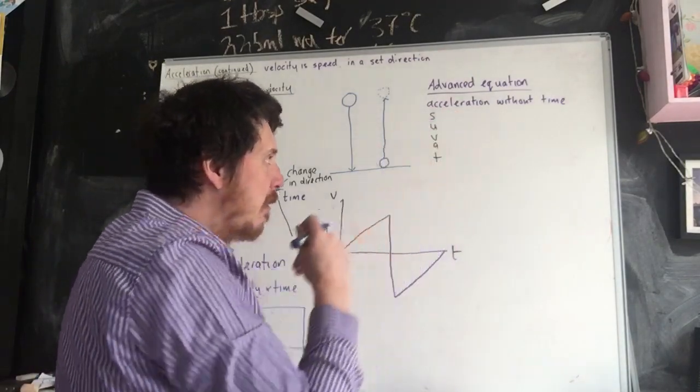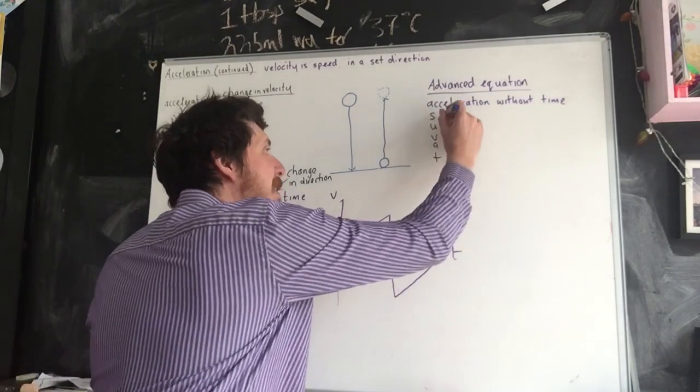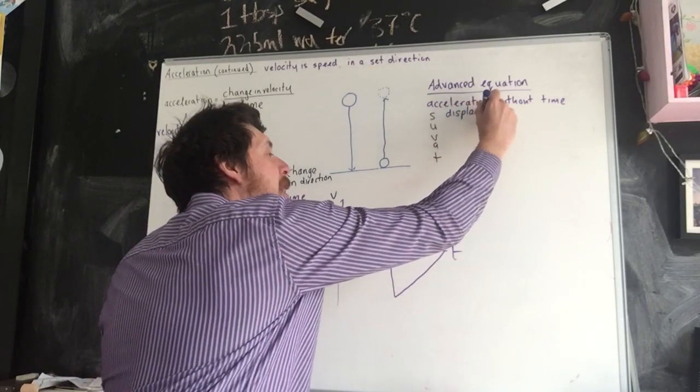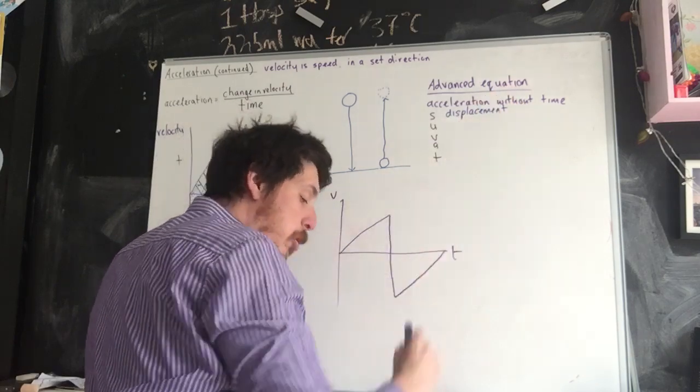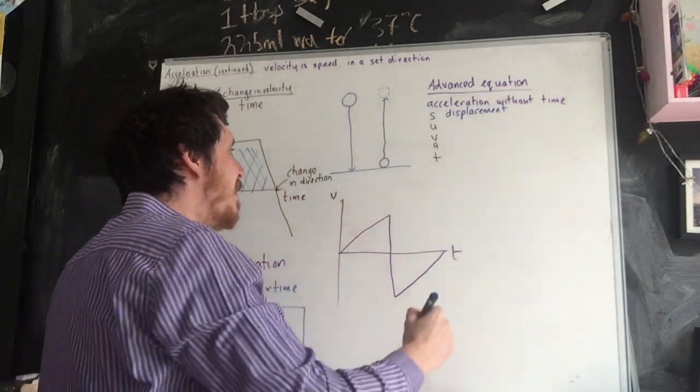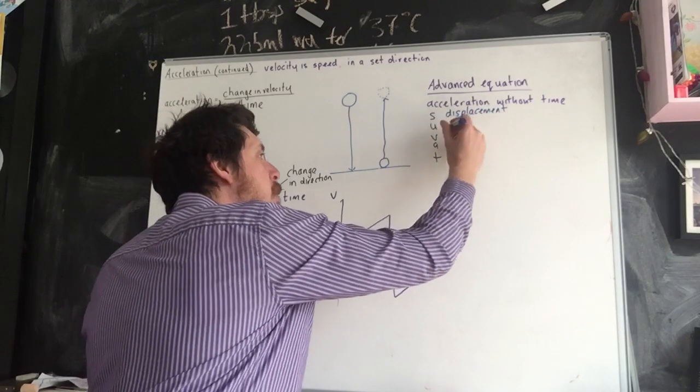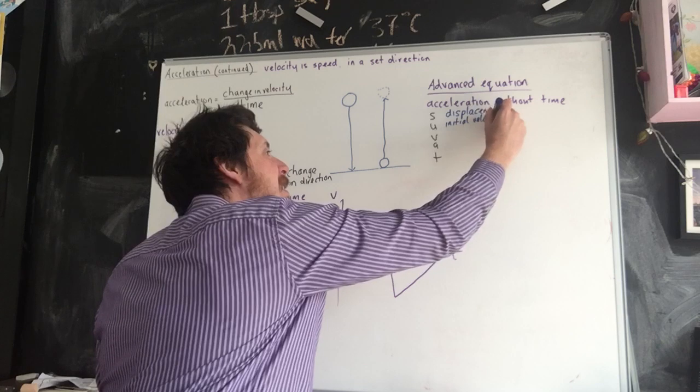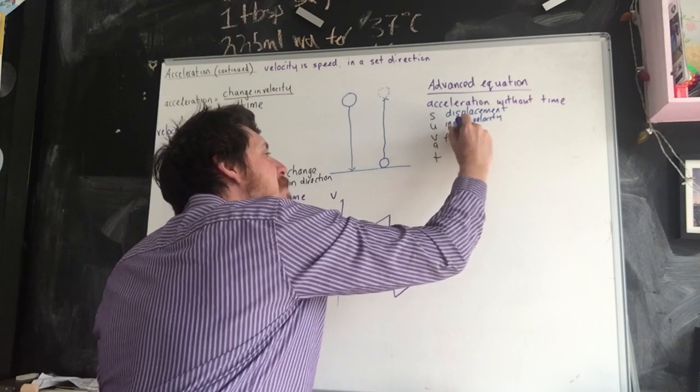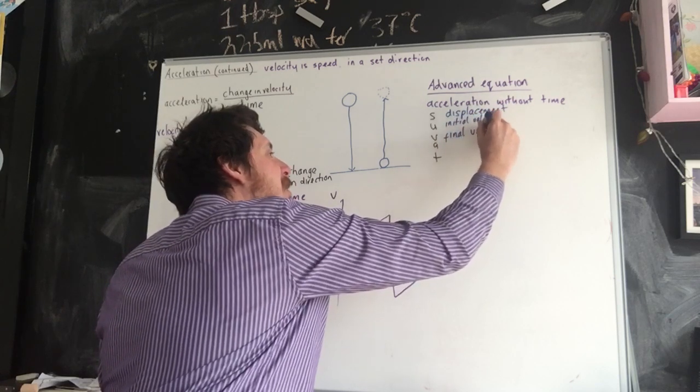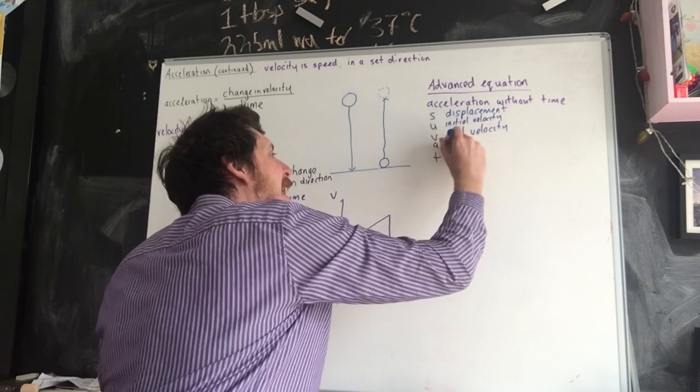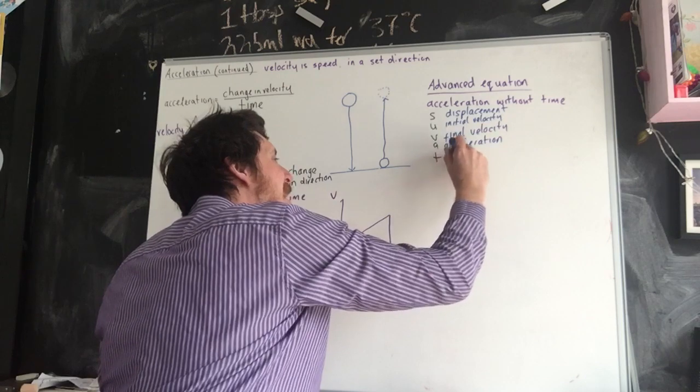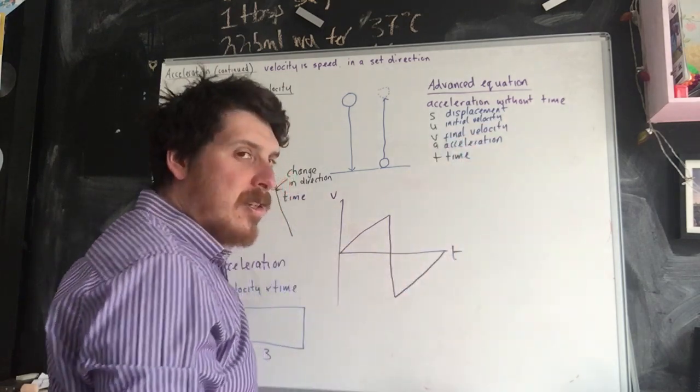There are five letters in physics that we use for things in this equation. S we use for displacement, and that comes from spatial location. U represents the initial velocity. V represents the final velocity. A represents the acceleration. And T represents the time.